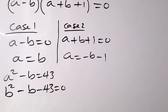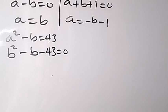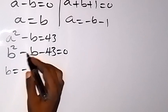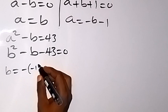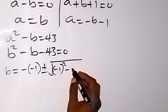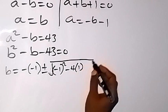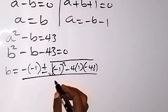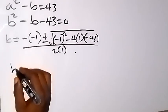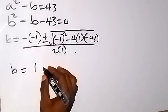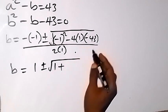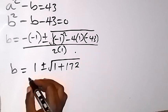We solve this quadratic equation using the quadratic formula. b equals minus b — where b is minus 1 — so minus minus 1, plus or minus square root of minus 1 squared minus 4 times 1 times minus 43, all over 2 times 1. That gives 1 plus or minus square root of 1 plus 172, all over 2.